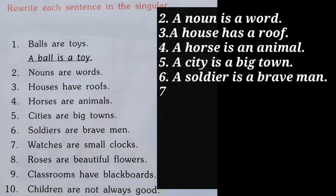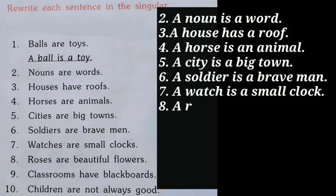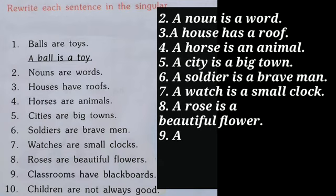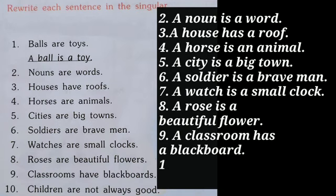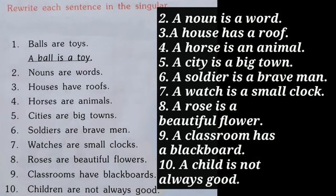'Horses are animals' in its singular form is written as 'A horse is an animal'. Note that 'an' comes before 'animal' because animal starts with A, which is a vowel. The fifth one, 'Cities are big towns', changes to 'A city is a big town'. Likewise, 'Soldiers are brave men' is converted to 'A soldier is a brave man'.